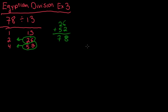So 78 divided by 13 equals 4 plus 2, because that's what these two numbers corresponded to. So 78 divided by 13 equals 6.